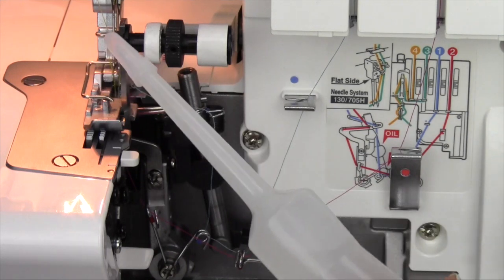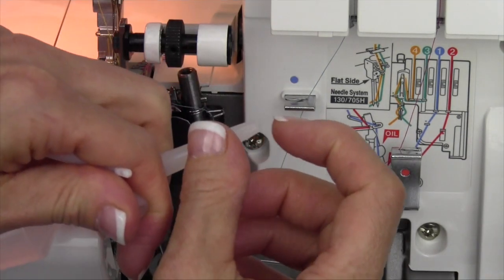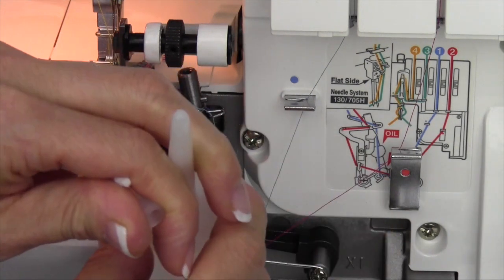Go ahead and pull out your oil that came in your accessory bag. Take off this. The very first time you use it, you're going to need to stick a little pin down there to open it up.